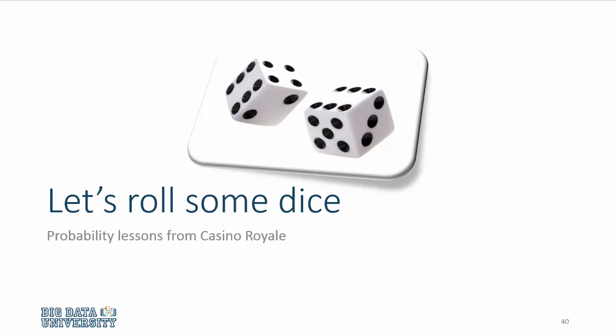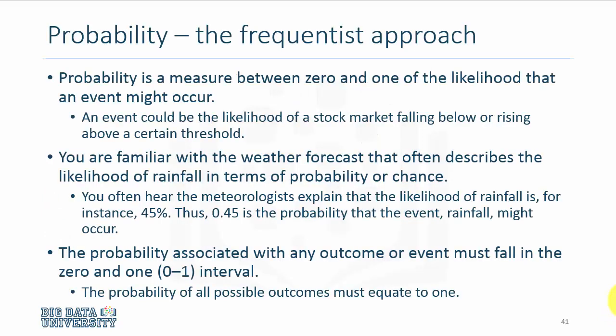Now, let us visit some basic definitions about probability as it relates to commonly used concepts in statistics. Essentially, probability is a measure between 0 and 1 for the likelihood that an event might occur. For instance, you may hear that the chance of stock markets rising above or falling below some point is x percent, or the chance for rain is 45 percent tonight. These are all coming from this concept of probability. Probability is a measure between 0 and 1, so 45 percent would be 0.45.